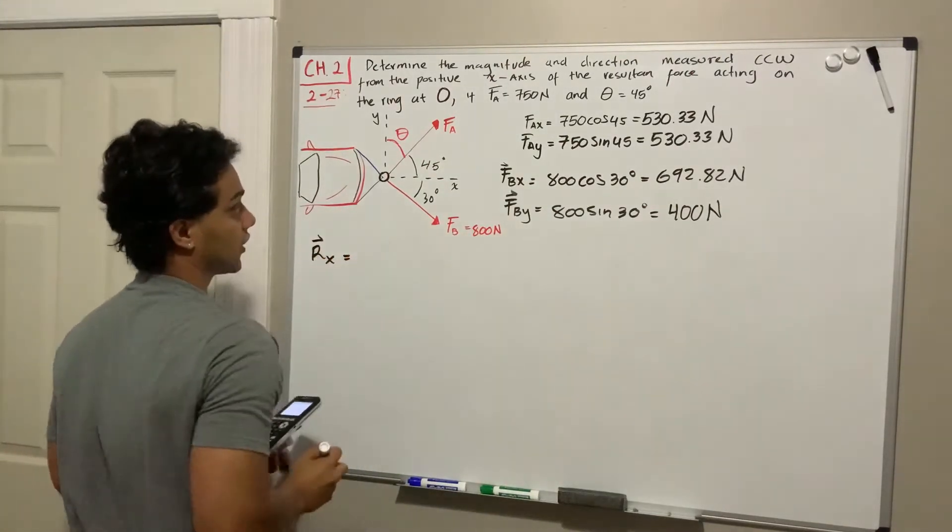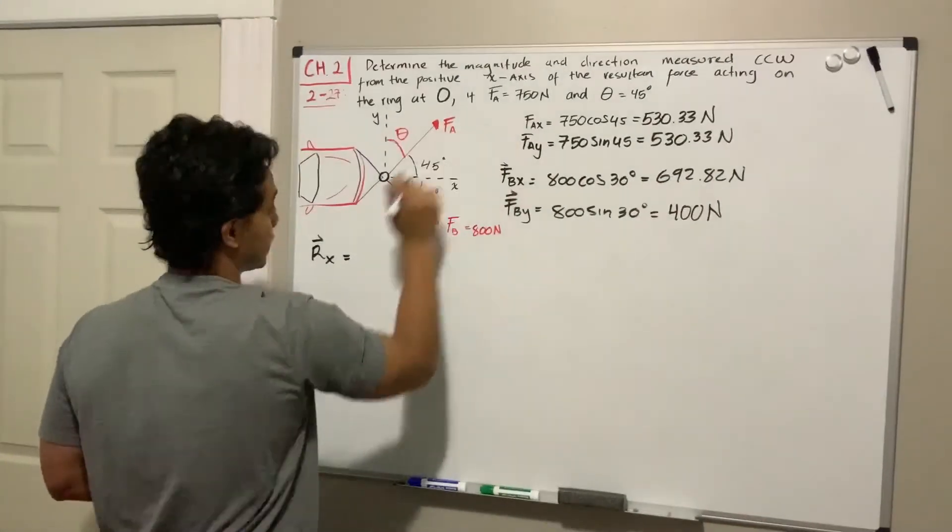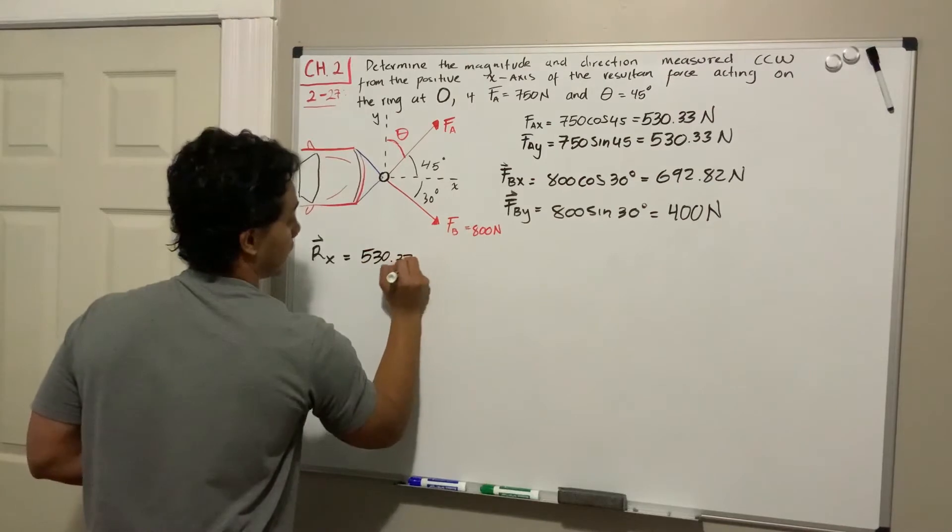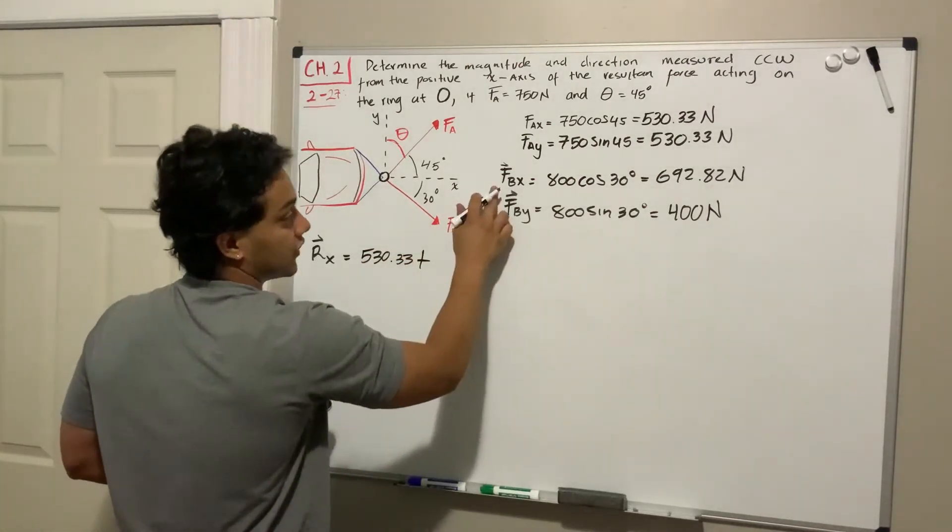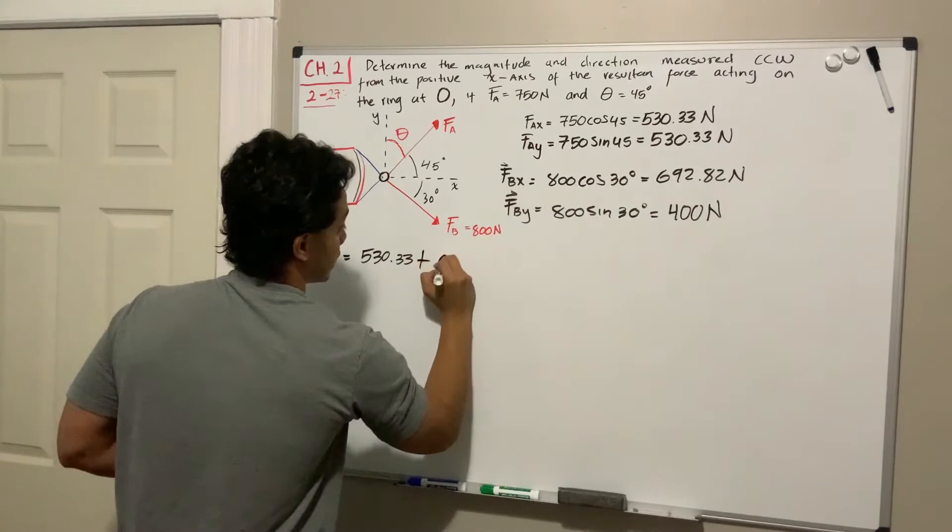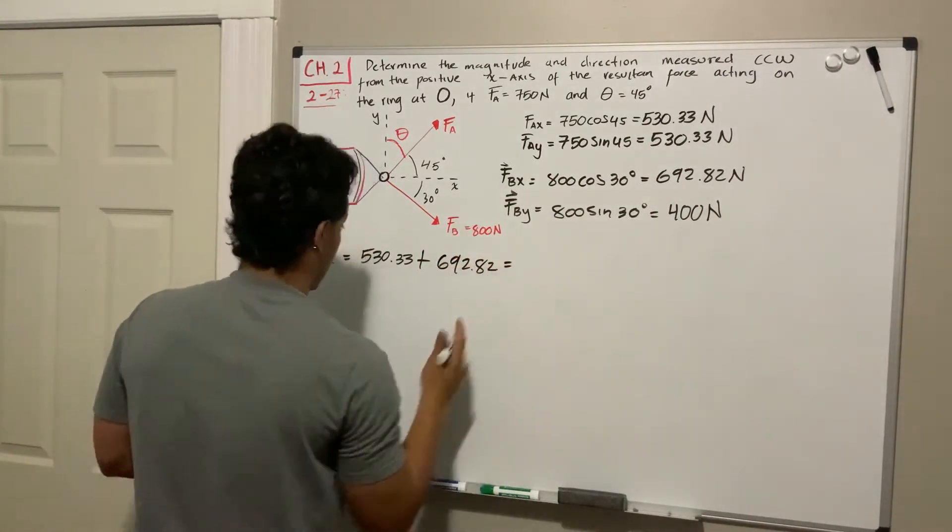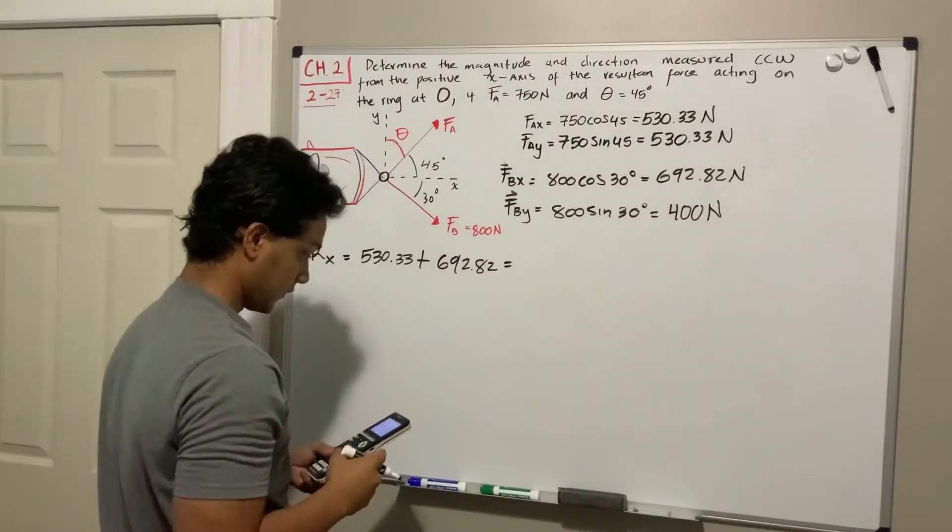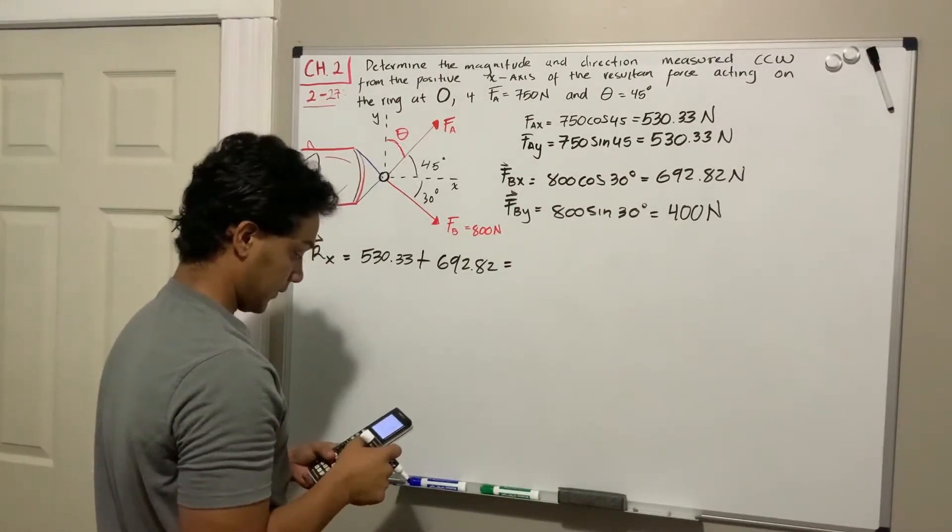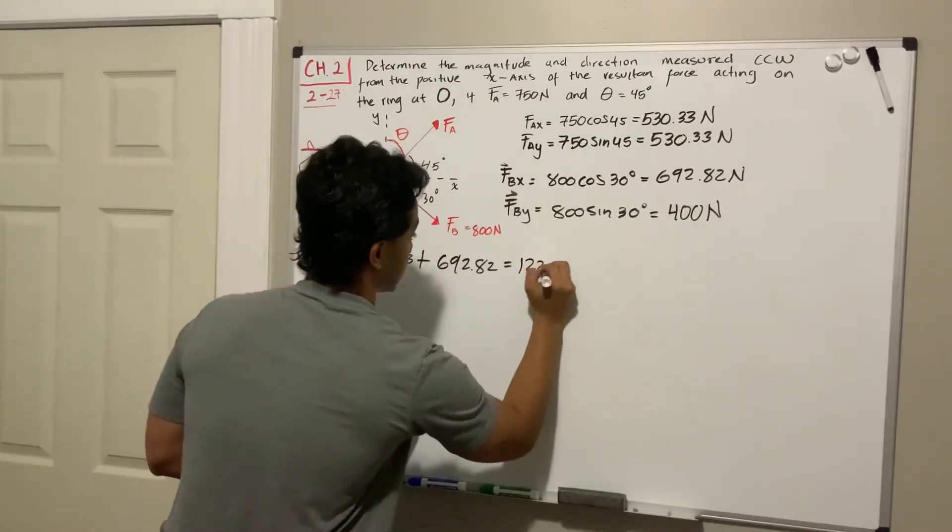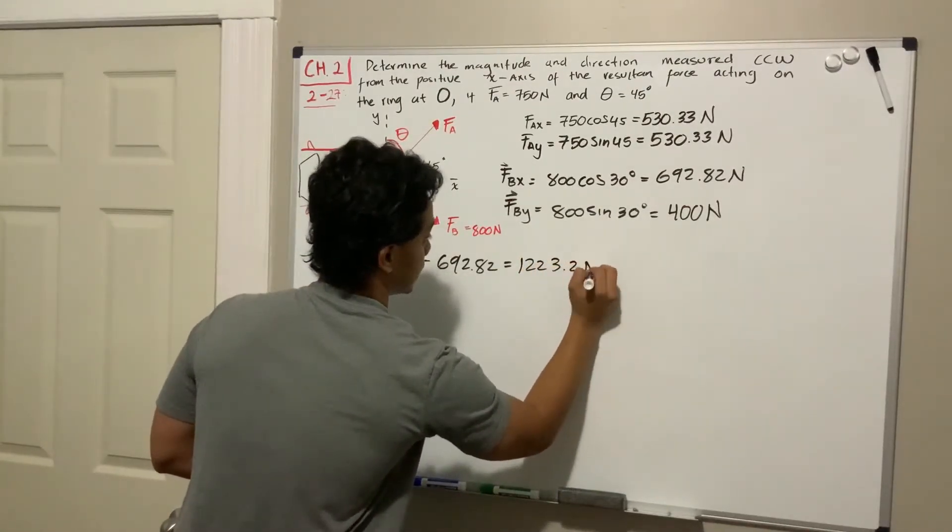The resultant in the x-direction is going to be 530.33 N plus the F_B in the x-direction, which is 692.82 N, and this will give us 1223.2 N.